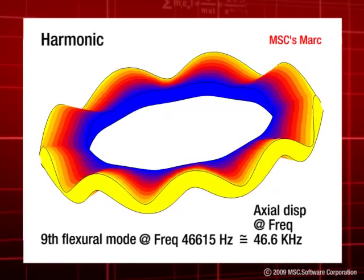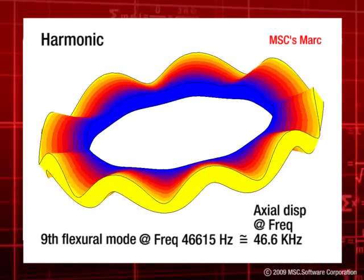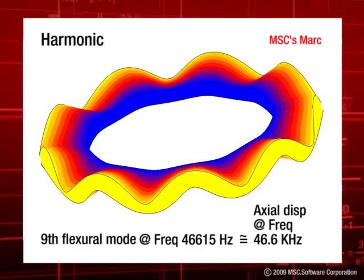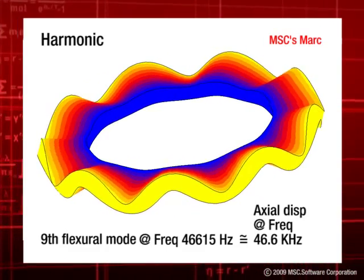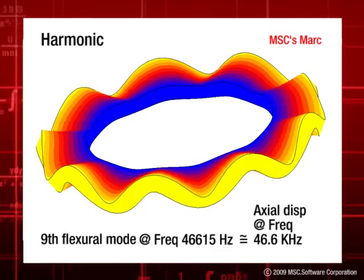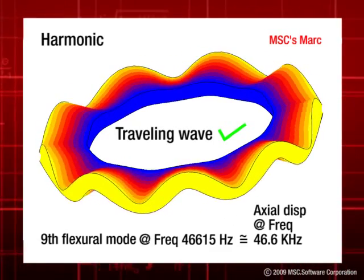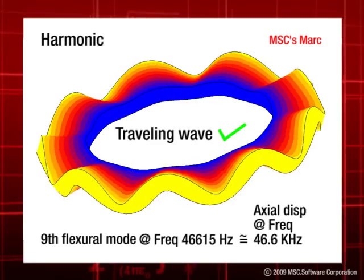Admittance can also be calculated from this simulation as a function of frequency, which shows an increase in admittance around the resonant frequency of the stator. The study confirms that a traveling wave will occur at the desired resonance frequency.